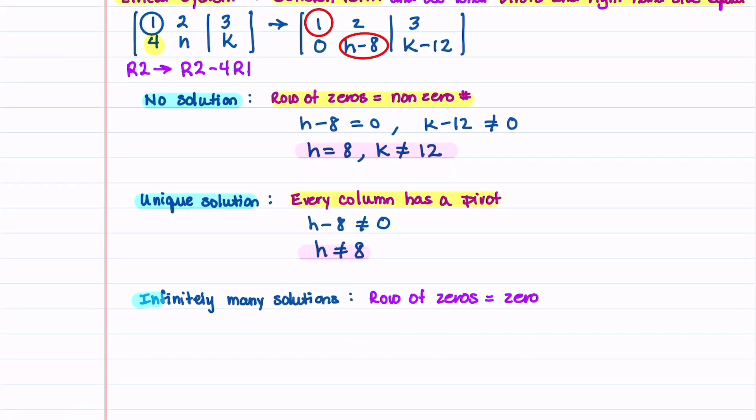Let's now look at our last one. This is when we have infinitely many solutions. When we have infinitely many solutions, we're going to have to have a row of zeros on the left-hand side and 0 on the right-hand side. So on our left-hand side, we're going to have H minus 8 equals 0, and then on our right-hand side, we're going to have to force K minus 12 to also be equal to 0. So this gives us a solution H is equal to 8 and K is equal to 12. So that's our solution when we have infinitely many solutions.